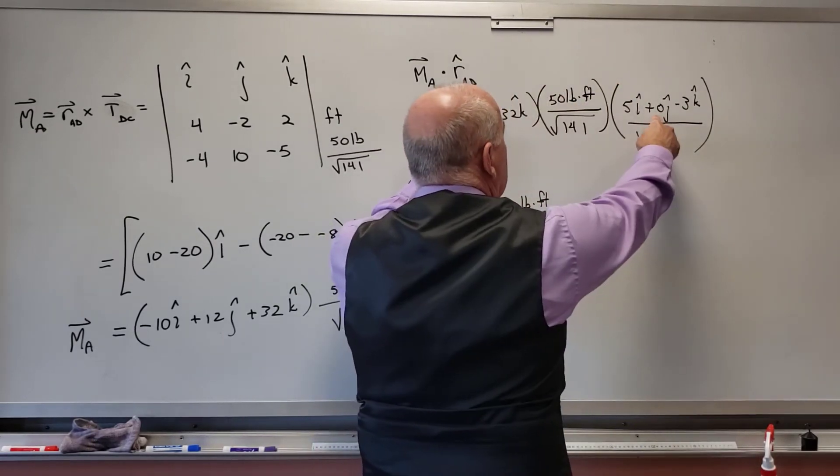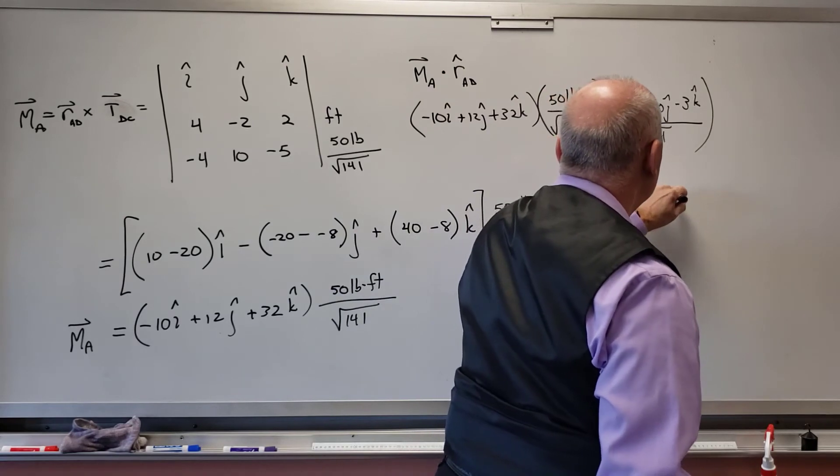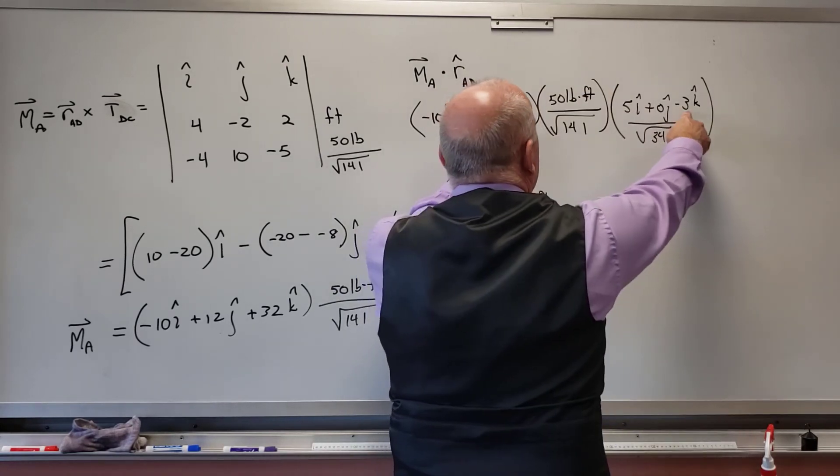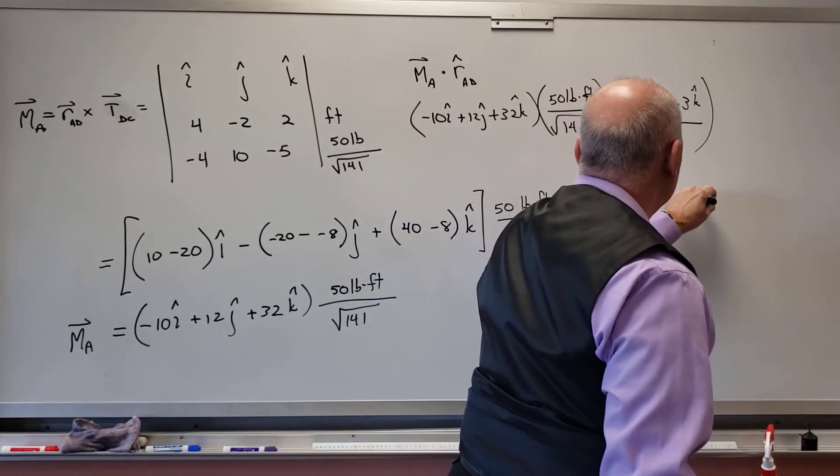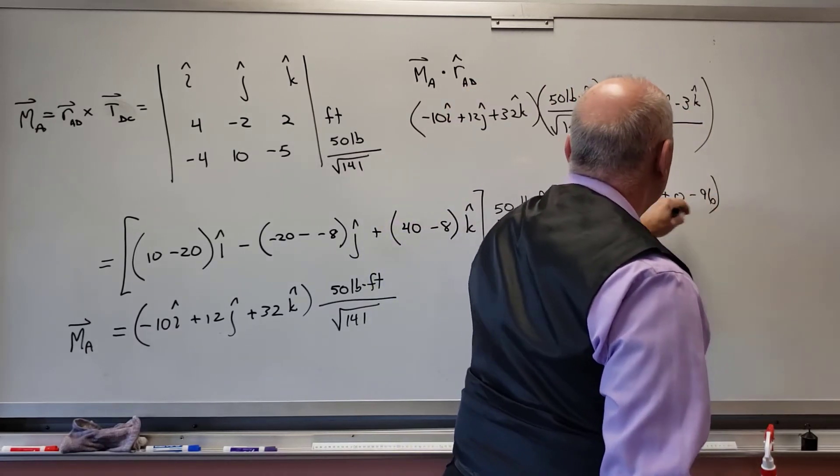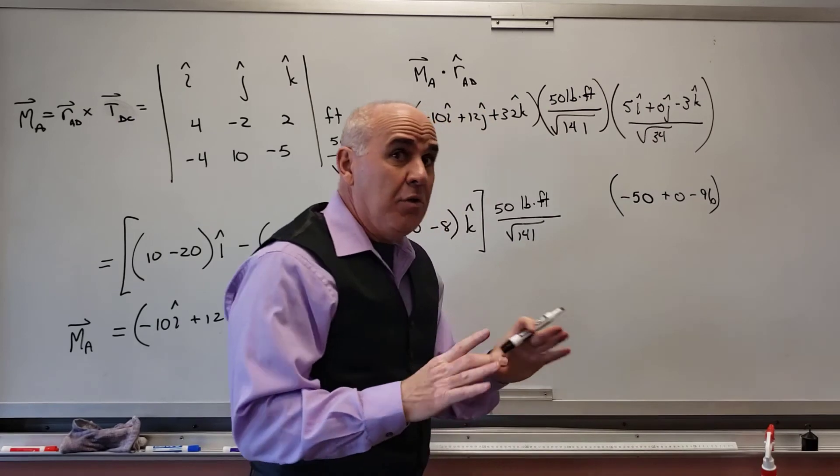So 5i plus 0j and then minus 3k all over radical 34.